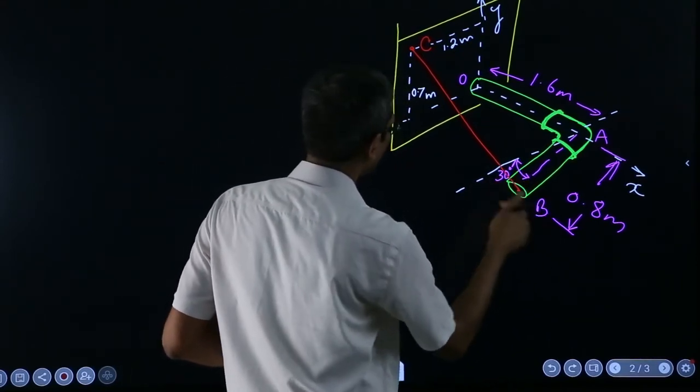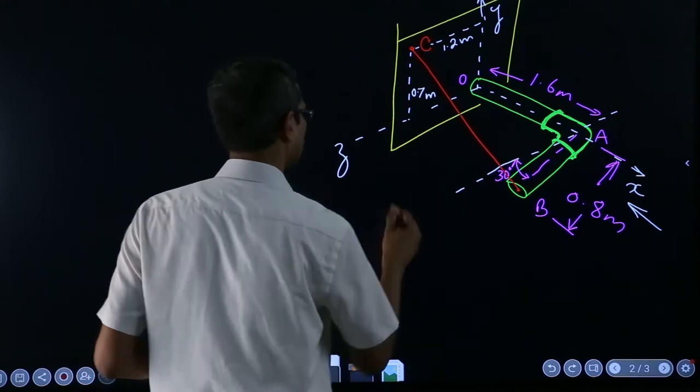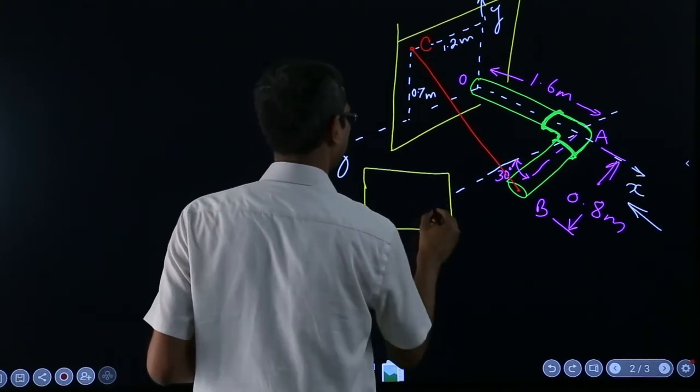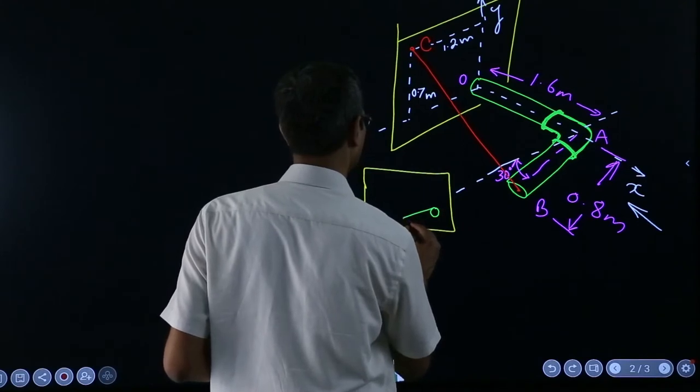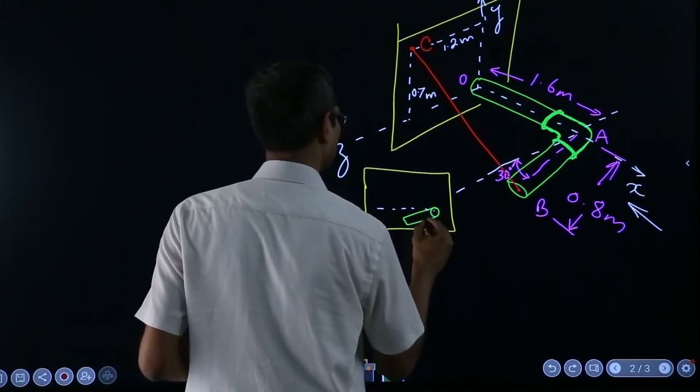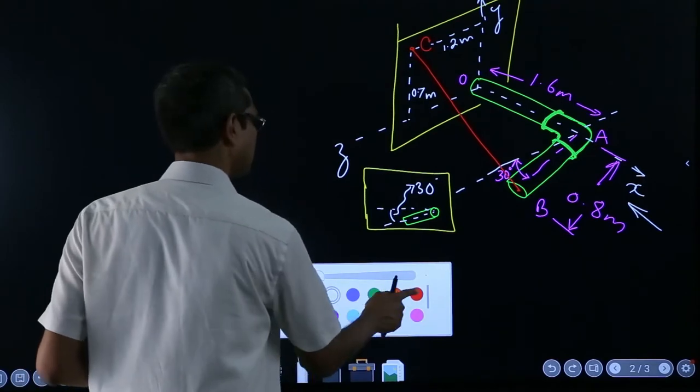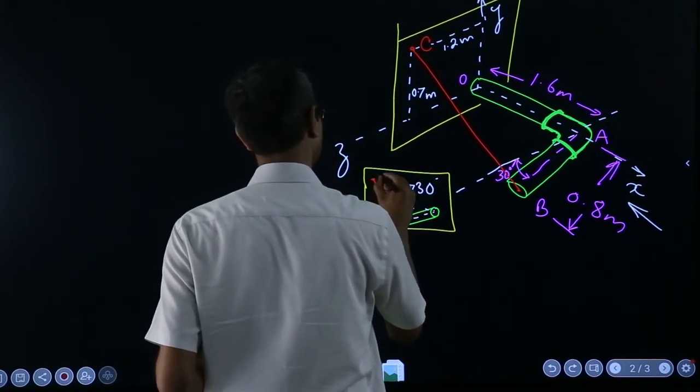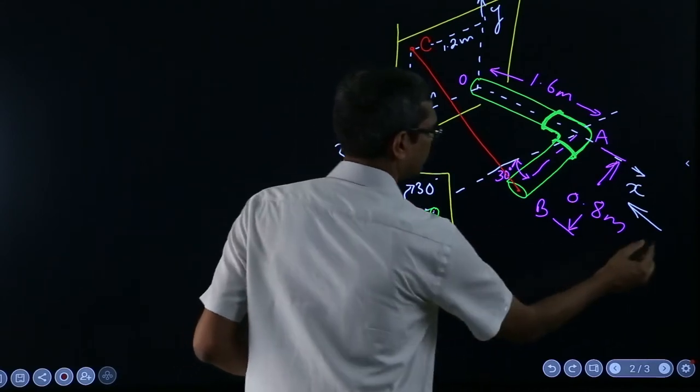If you try to see the system from the x direction, the picture will look something like this. This may be the wall and the pipe is somewhere here and it comes out this portion, and then this bend is like this. This angle is 30 degrees, and this is the view from positive x.